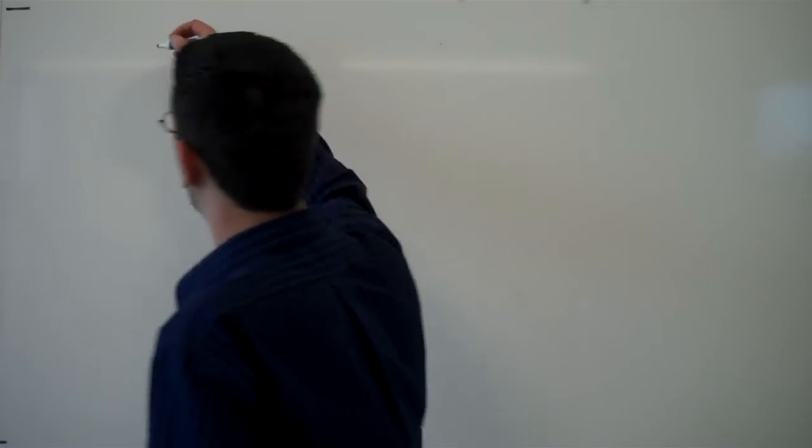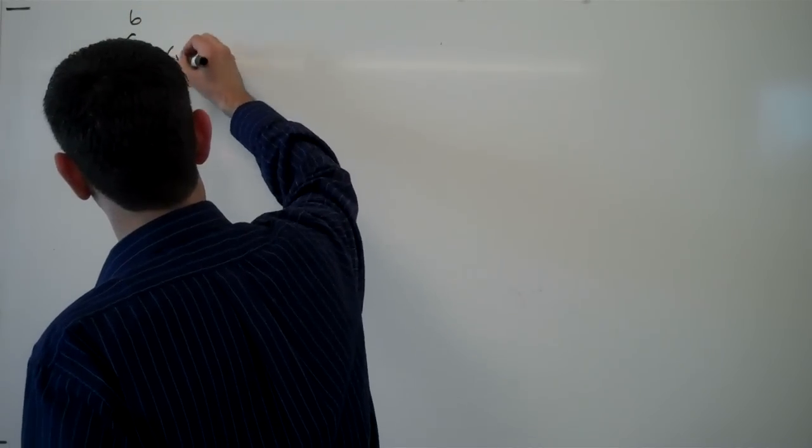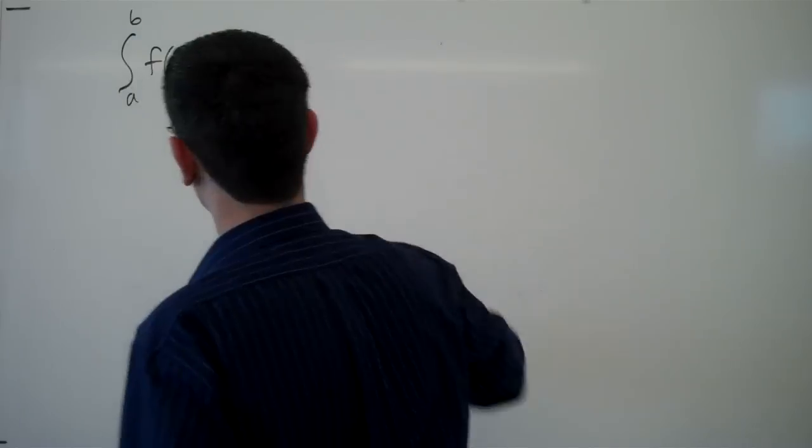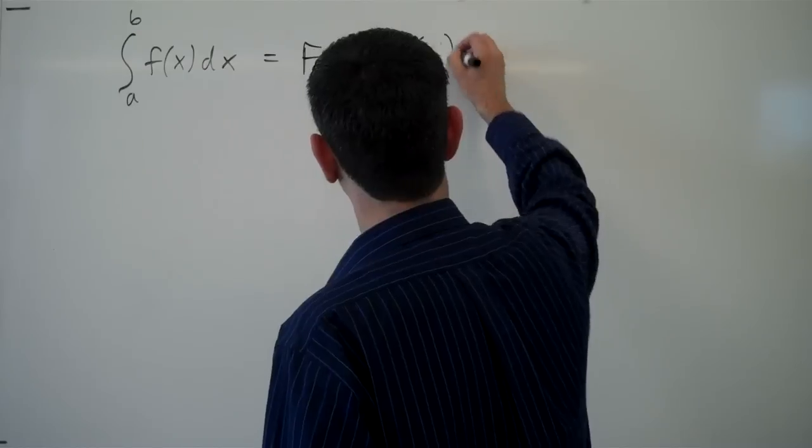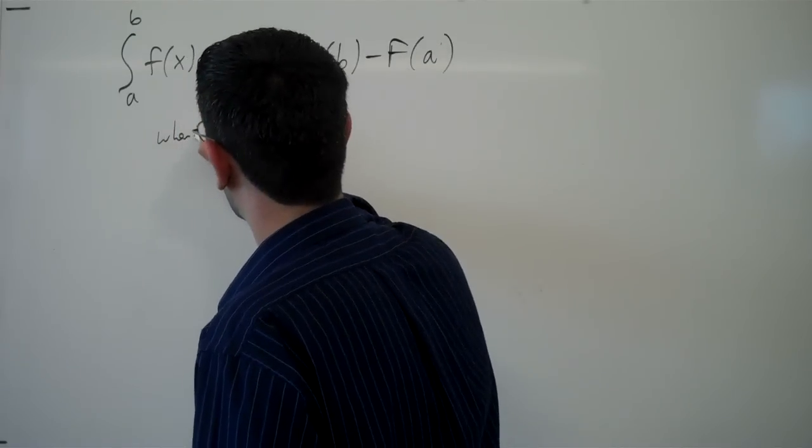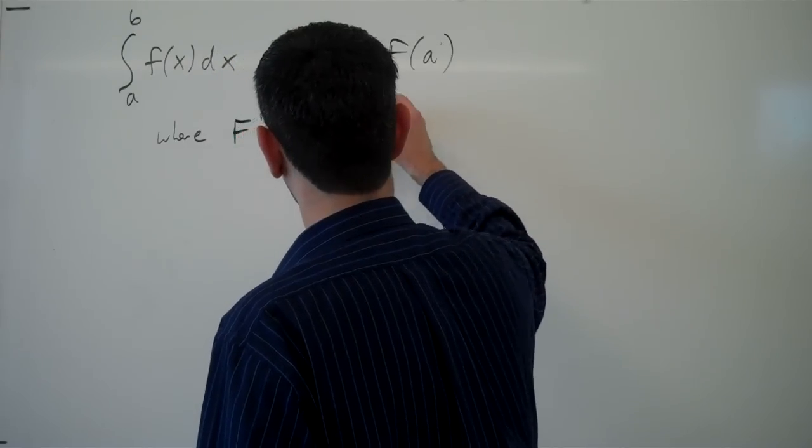It states that if f is a continuous function, the definite integral from a to b of f(x)dx will be F(b) minus F(a), where the derivative of big F is little f.